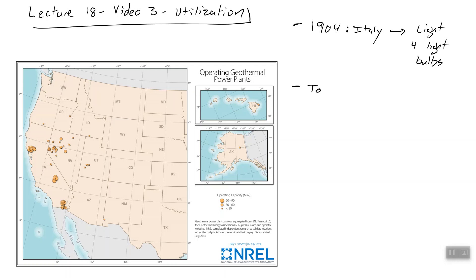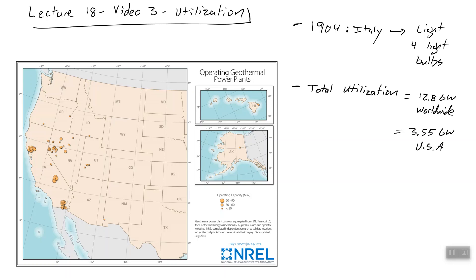Today, that has grown so that the total amount of power we generate using geothermal resources in the world is 12.8 gigawatts — that's worldwide, as of 2018. In the United States, that number is 3.55 gigawatts. We actually have a pretty decent share despite not having the best geothermal resources.